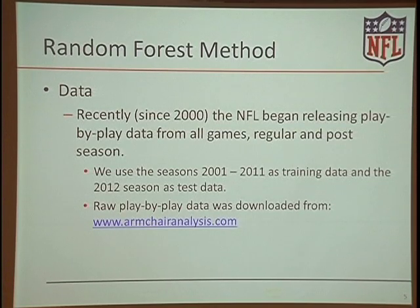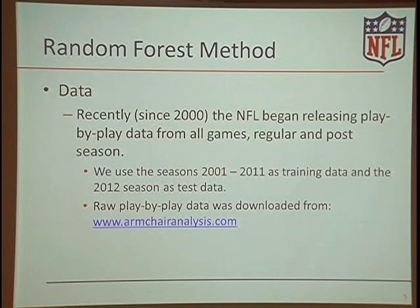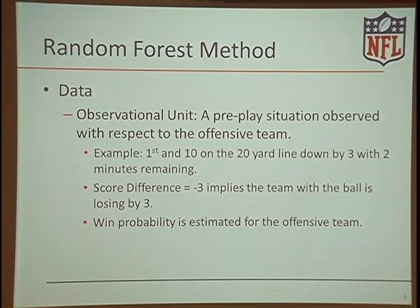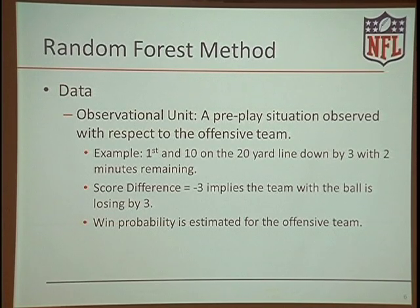Since around 2000, the NFL began releasing play-by-play data from all games, both regular season and postseason. We're using all seasons from 2001 to 2012, setting aside 2012 as the test dataset, with 2001 through 2011 as our training data. The raw play-by-play data was free until about three months ago and now costs about $15. The observational unit is any pre-play situation — for example, first and 10 on the 20-yard line, down by three with two minutes remaining — observed with respect to the offensive team, so a score difference of negative three means the team with the ball is losing by three.